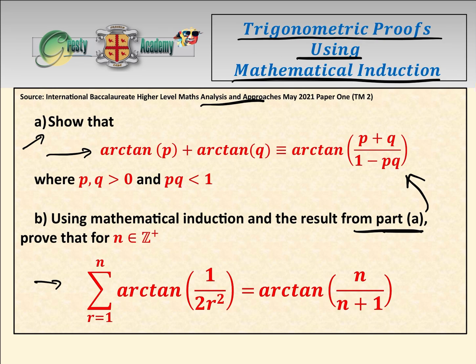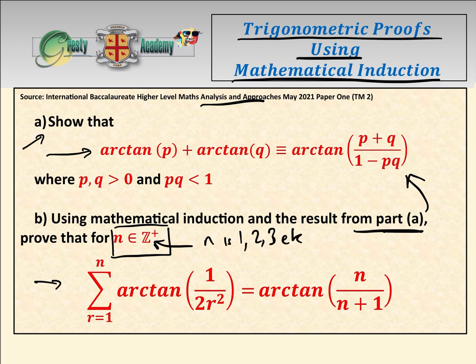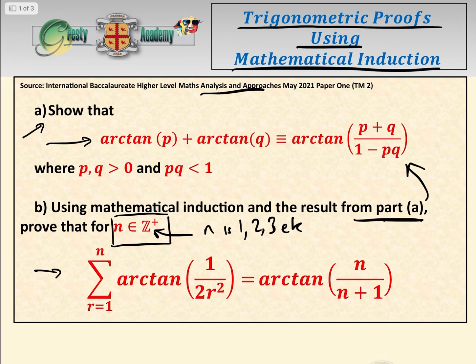There are a couple of things to note about this question before we start. Clearly here we have N contained in Z plus. All that means is that N is 1, 2, 3, etc. — i.e. it's a positive integer. Apart from that, let's go.